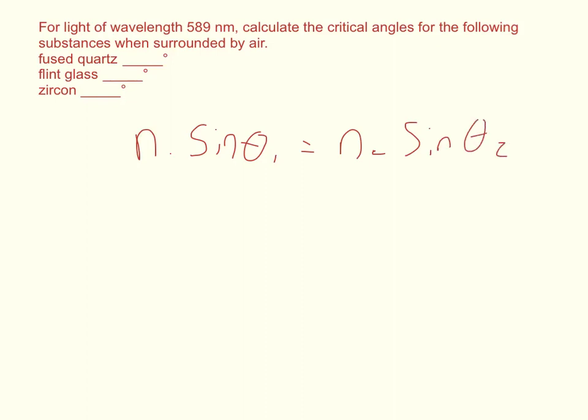And then we're going to define a few things. We're going to define n1 as the critical angle. So n1 times the sine of the critical angle is equal to n2 times the sine. And by definition, so let me go ahead and draw a picture. This has to be a sine of 90. I'm going to draw a picture and show why.